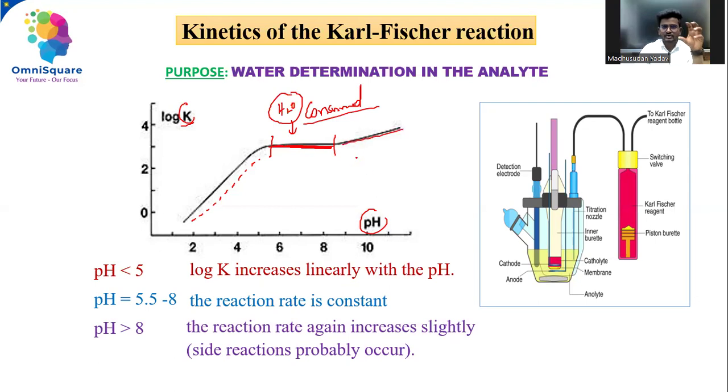What about this region? In Karl-Fischer titration, we use iodine and sulfur dioxide. Due to these buffer conditions, there may be some side reactions that take place. So this line indicates side reactions.